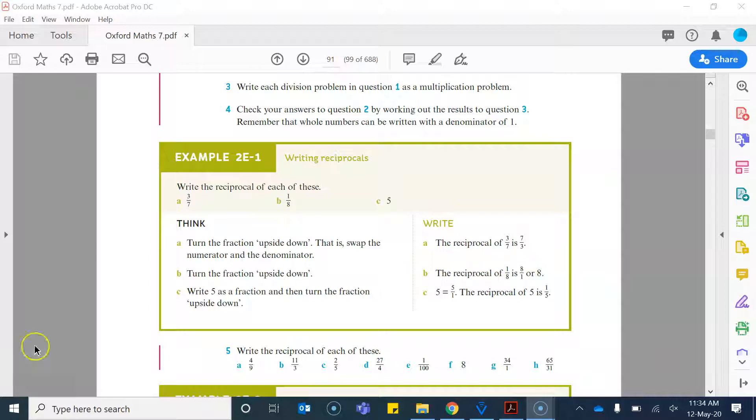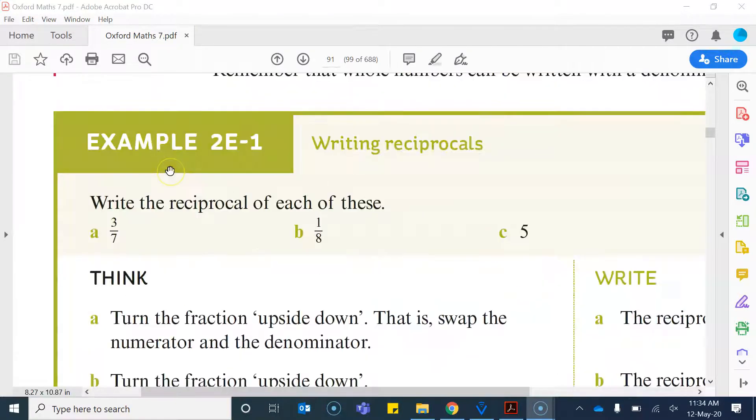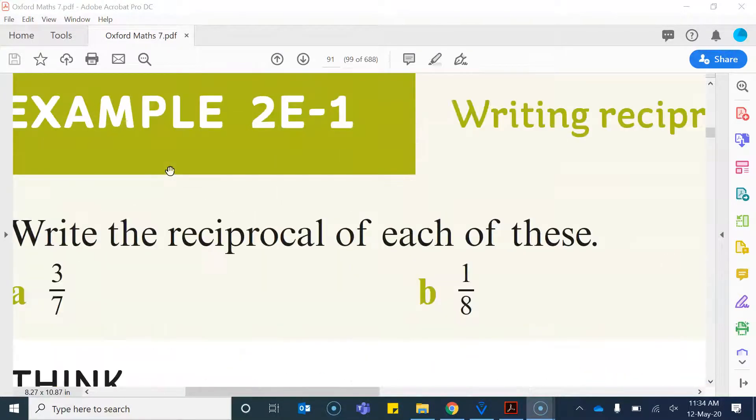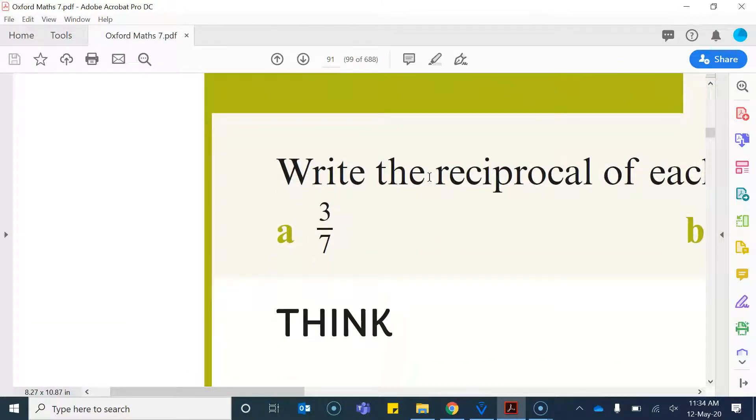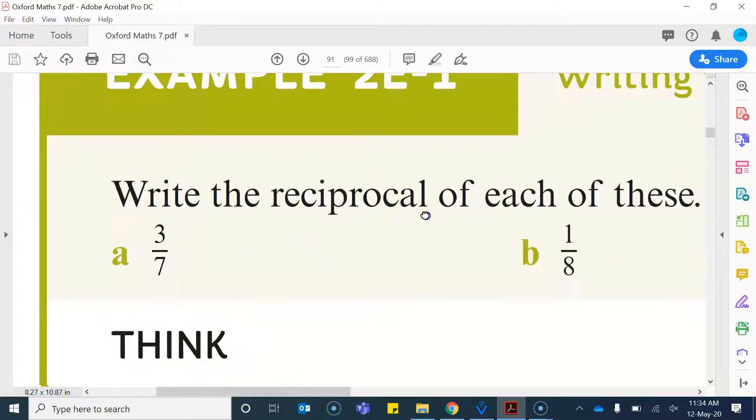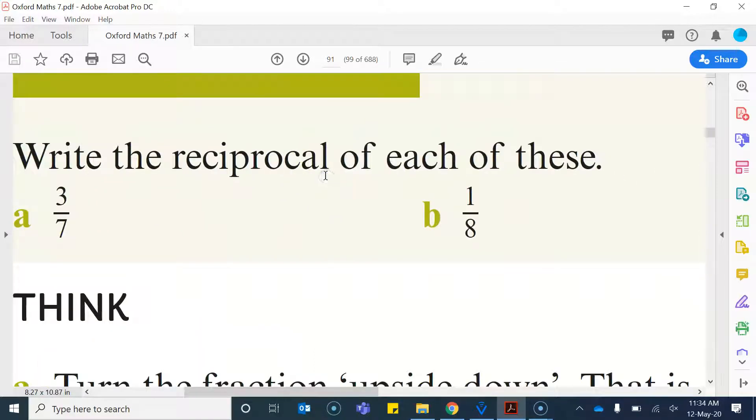The reciprocal of a number basically means that we turn the fraction upside down. So for example, if I had 3 over 7, the reciprocal of 3 over 7 is 7 over 3. Okay, so you just flip the two around. Or in part b, the reciprocal of 1 over 8, can anyone guess what that would be?